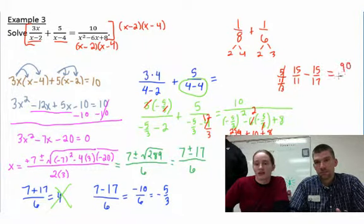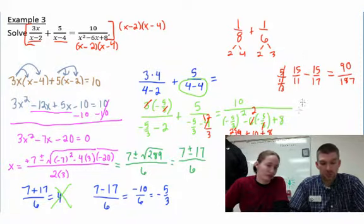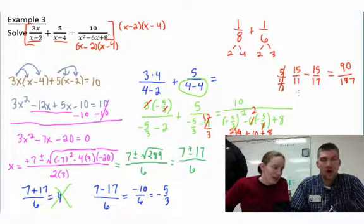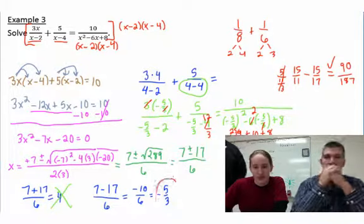So we're trying to figure out if this is really equal. So 15 over 11 minus 15 over 17. 15 divided by 11 minus 15 divided by 17. Math, enter, enter, enter. 90 over 187. Awesome. So negative 5 thirds was the answer.